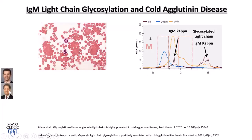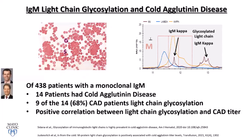Dr. Gertz had a grant from the Waldenström's Foundation to look for AL amyloidosis in IgM patients. Instead, we found a high association with cold agglutinin disease. Many cold agglutinin patients have monoclonal IgM kappa, but what distinguished them? In our cohort, 9 out of 14 patients with cold agglutinin disease had light chain glycosylation — versus only 5% in the general population. Patients with glycosylation also had higher cold agglutinin titers.